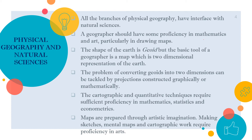Geographers also use mathematics and arts. Mathematics is used because geography involves maps. The earth is a sphere, but a two-dimensional representation is needed. To graphically present the earth you need cartographic techniques and mathematics. If you can make maps, you can make art, so a geographer should be good at both. Mathematics is needed for statistics and cartographic techniques to make maps.